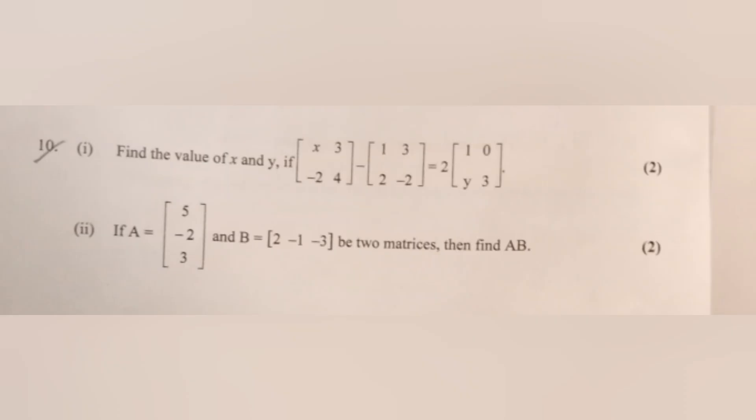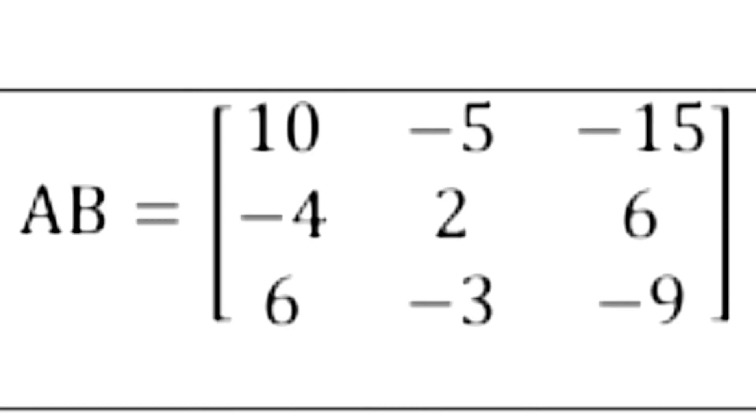Find the value of x and y if the matrix equation [x 3 / -2 4][-1 3 / 2 -2] equals [2 1 / 0 y 3] holds. Answer: x = 3 and y = -2. If A = [5, -2, 3] and B = [2, -1, -3] be two matrices, find AB. Answer: AB equals [10, -5, -15 / -4, 2, 6 / 6, -3, -9].